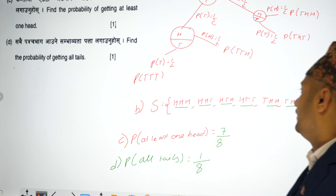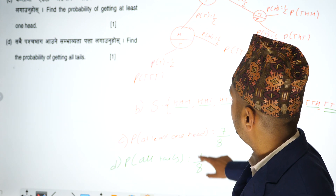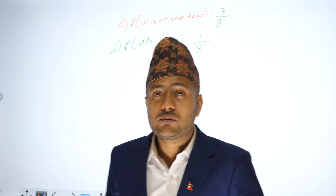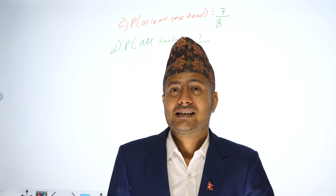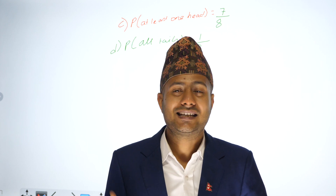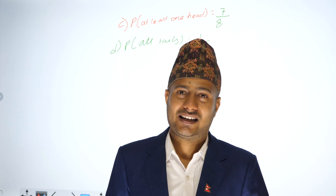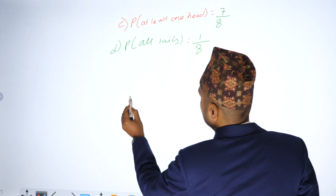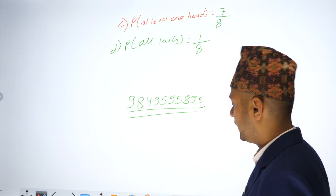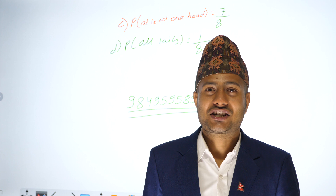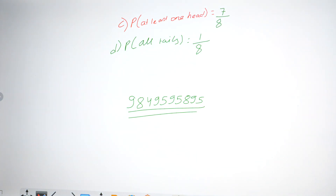The probability of at least one tail is 7 by 8, so the probability of at least one tail is 7 by 8.